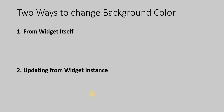So those are the two ways to change the background color of an icon. If you want to change it across all service portals, use the first way — from the widget itself. If you want to make changes only in one portal at a time, make changes in the widget instance to change only that portal's color. I hope this video was helpful. Please subscribe to my channel and let me know in the comments if you have any questions.